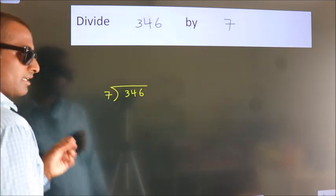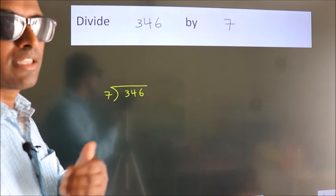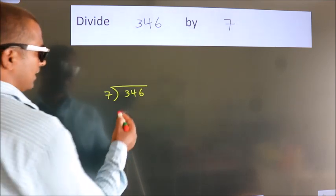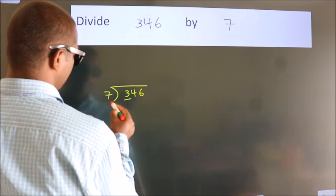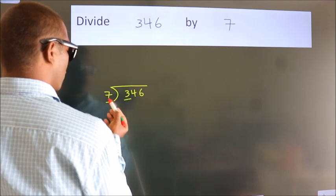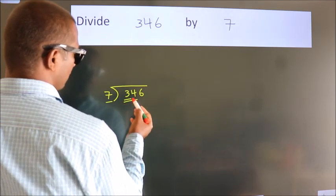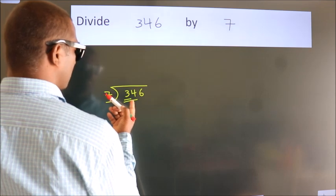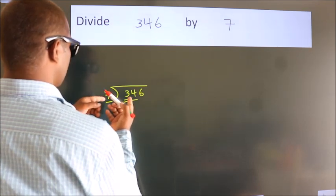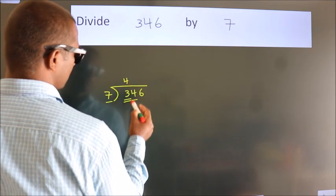This is your step 1. Next, here we have 3, here 7. 3 is smaller than 7. So, we should take two numbers, 34. A number close to 34 in 7 table is 7 fours, 28.